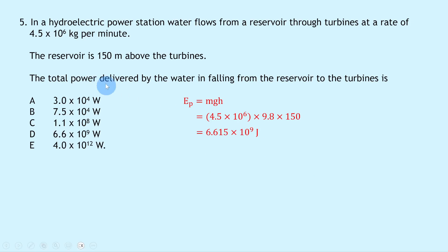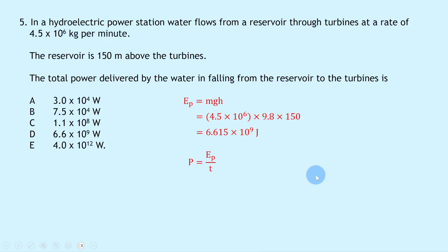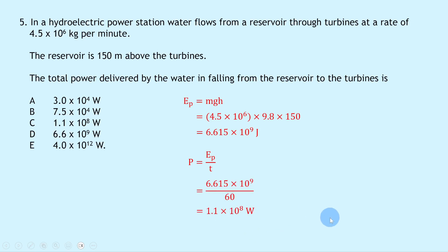To calculate power, we use P = Ep/t. Since the mass is given per minute, we use 60 seconds as our time: P = 6.615 × 10⁹ ÷ 60 = 1.1 × 10⁸ watts, which is answer C.